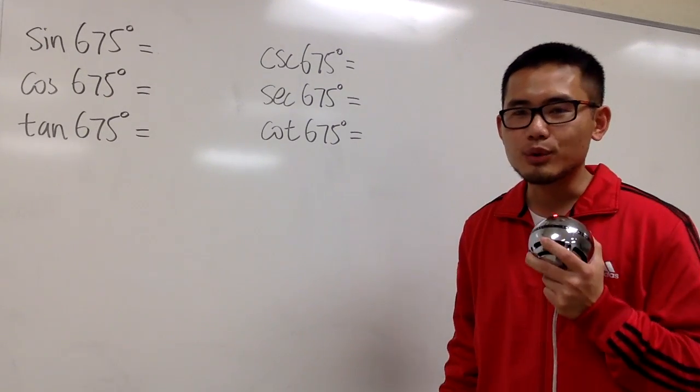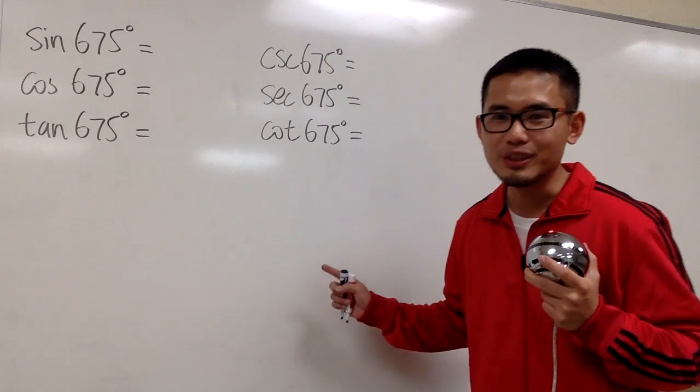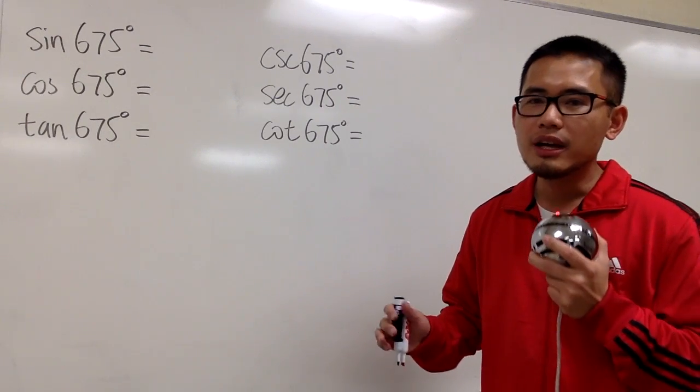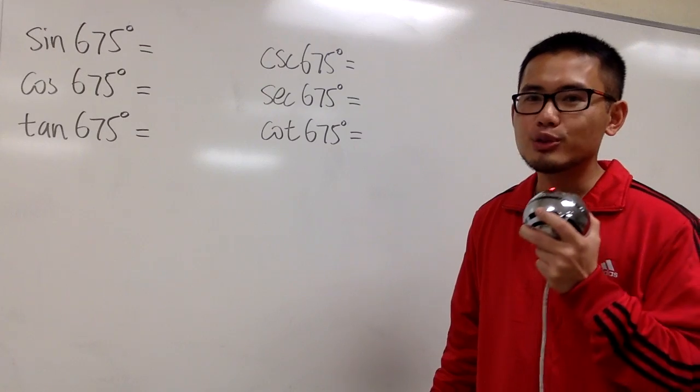Okay, we're going to figure out the exact values for other trig functions when the angle is 675 degrees. So be sure you draw a picture and come up with a reference angle, and remember the ratio of the sides for the special right triangles.